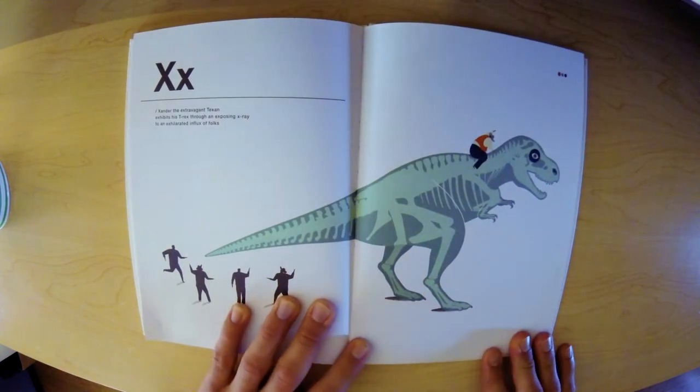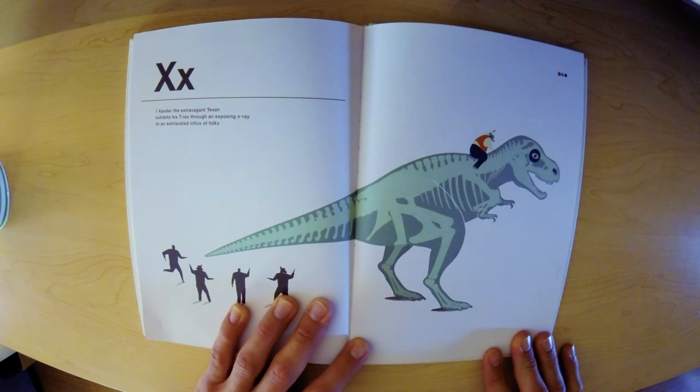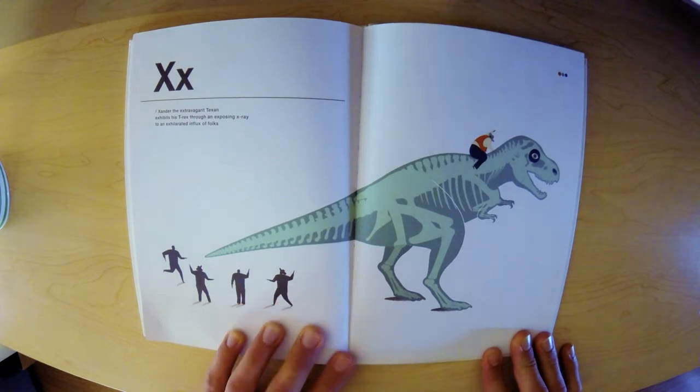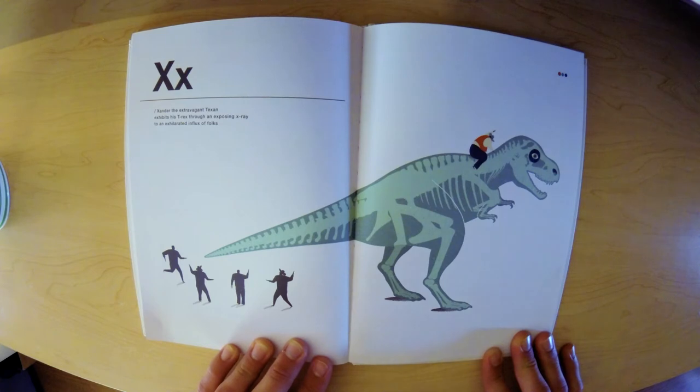X. Xander the extravagant Texan exhibits his T-Rex through an exposing X-ray to an exhilarated influx of folks.